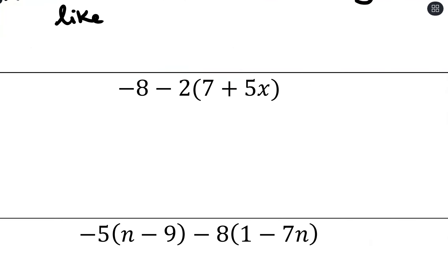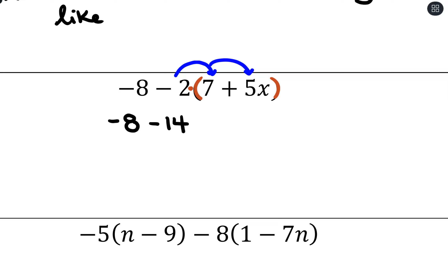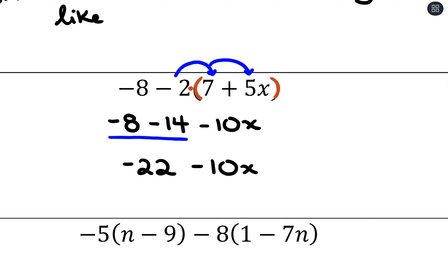Looking at the parentheses again, (7 + 5x) can't be combined. A common mistake is that students want to do negative 8 minus 2, but we save subtraction for the very end. We need to think of this as negative 2 times the quantity (7 + 5x) and take care of multiplication first. Distributing negative 2: negative 8 stays out front, negative 2 times 7 is negative 14, negative 2 times 5x is negative 10x. Combining like terms: negative 8 minus 14 is negative 22, giving us negative 22 minus 10x.